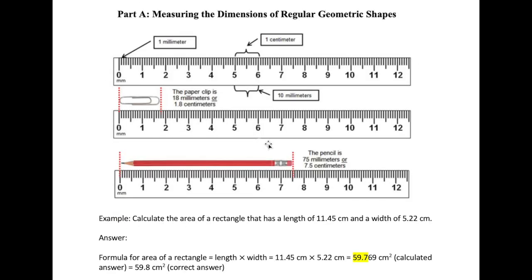Now let's go through the actual experiments. The first experiment is measuring the length, width, and diameter of different geometric shapes — circles, triangles, rectangles, squares. Remember: read all the certain digits plus one uncertain digit. That's a key measurement technique in chemistry, so don't forget it.